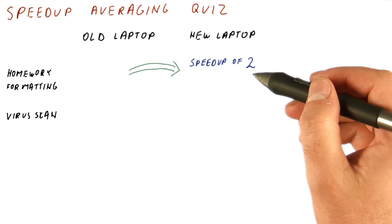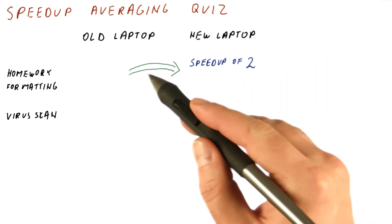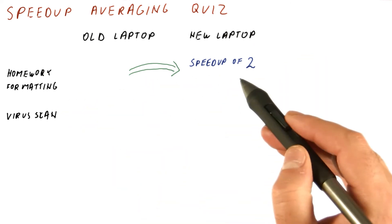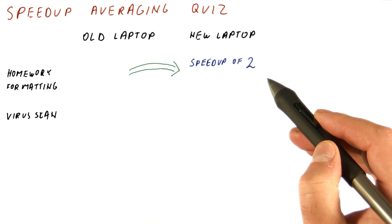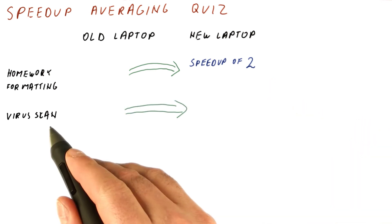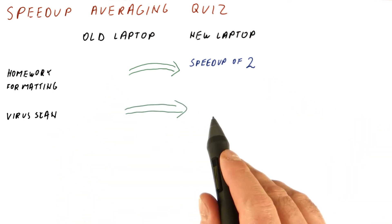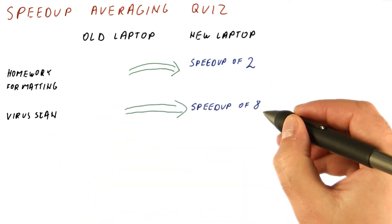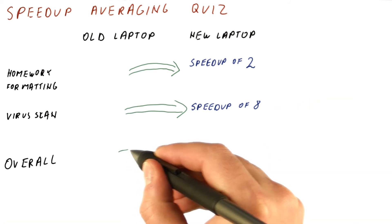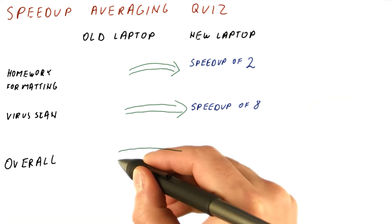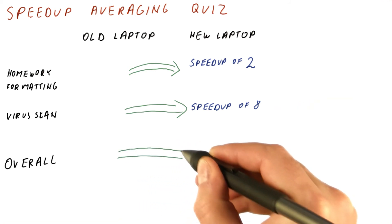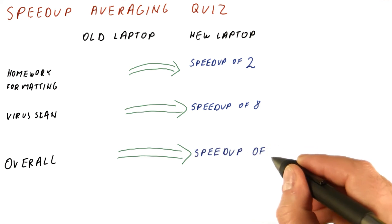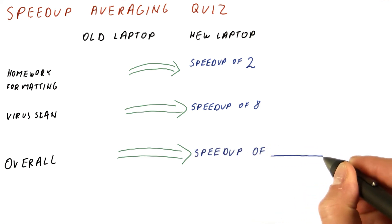For homework formatting, going from the old laptop to the new laptop gives us a speedup of two. For virus scanning, going from the old laptop to the new laptop gives us a speedup of eight. So overall, going from the old laptop to the new laptop gives us a speedup of how much?